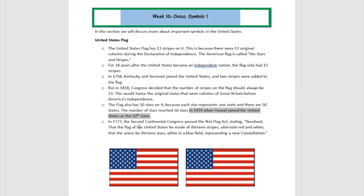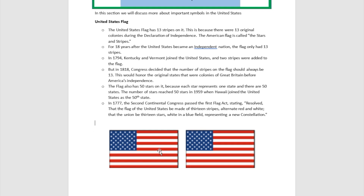So in 1777, the Second Continental Congress passed the First Flag Act, stating: 'Resolved, that the flag of the United States be made of 13 stripes, alternate red and white, that the union of the 13 stars, white in a blue field, representing new constellations.' So if you count the number of stripes on the flag, you're going to see 13 — there's a red one, a white, another red, white — count them all and you're going to see 13, and then 50 stars as well.